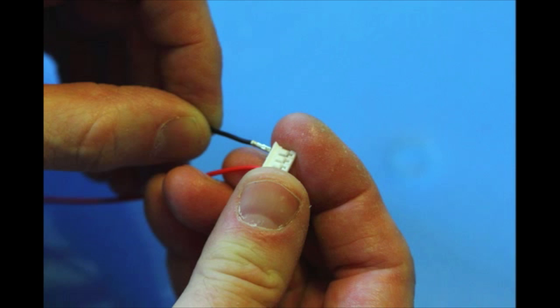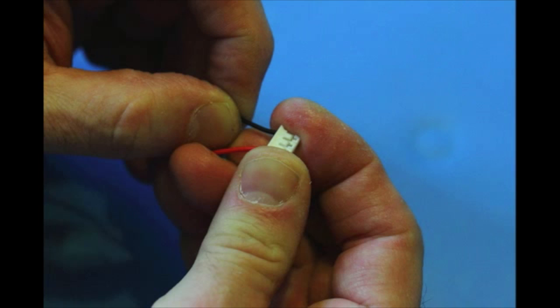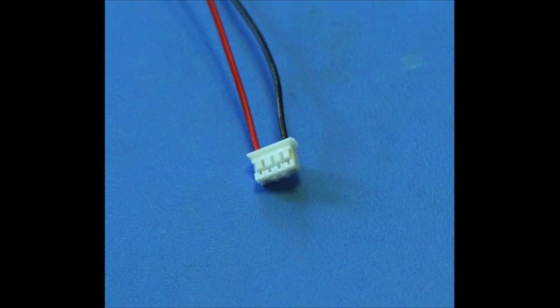Simply slip the black wire into the far hole leaving the two middle holes empty. Listen for the snap of the pin engaging in the retainer. Give it a gentle tug to make sure it is seated.